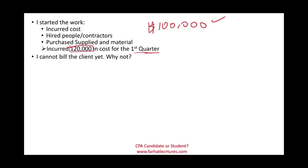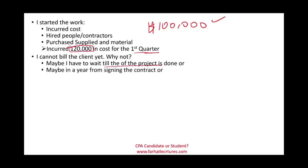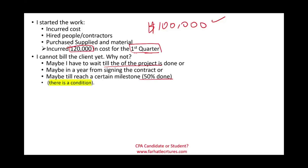Why can't I bill the client for that additional $20,000? It could be many reasons: it could be part of the agreement that I have to wait until the project is done, or I can only bill on a yearly basis — I just finished the first quarter and have to wait a year from signing — or I need to reach a certain milestone, like 50% completion, before I can bill them for additional funds. Whatever it is, there is a condition and I cannot bill the client that additional $20,000. Bear in mind I have to debit a total of $120,000 in assets because this is how much I incurred.